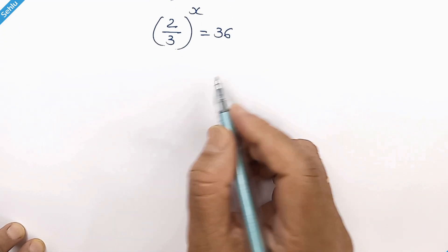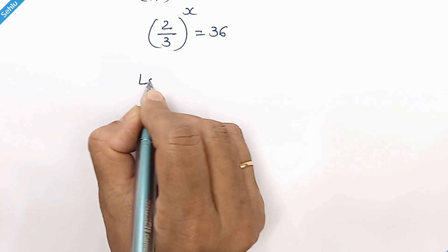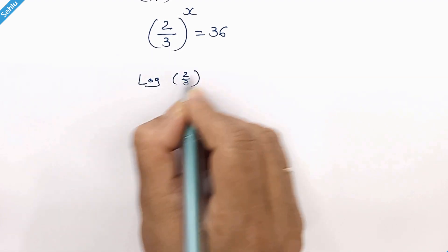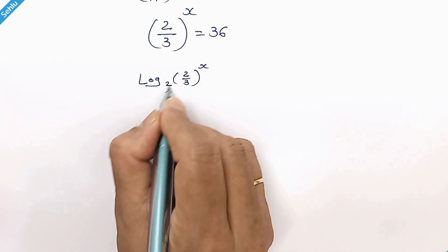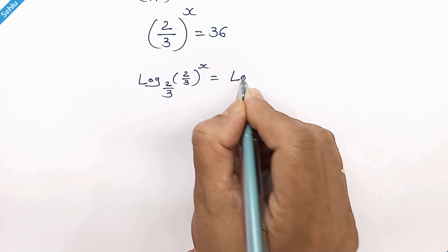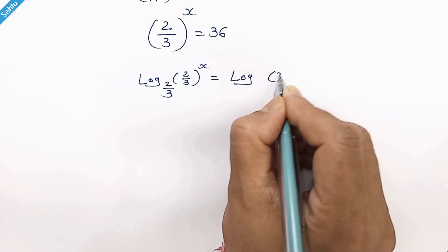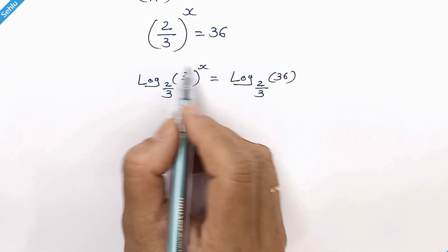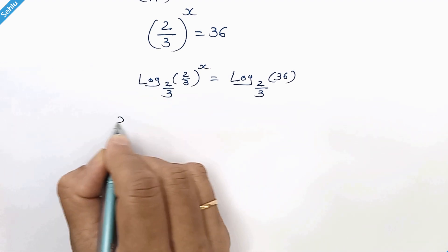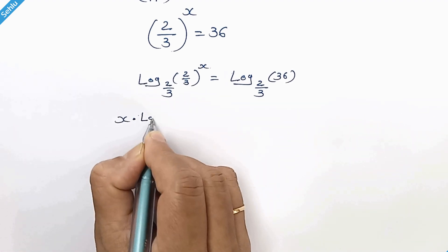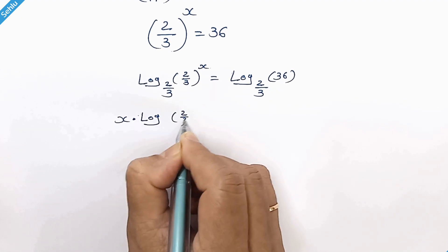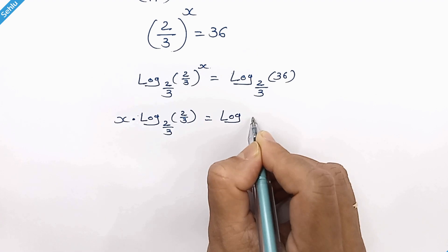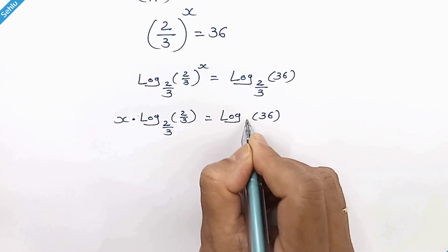From here we need to take a log having base of 2 over 3. This x can be a factor. So it will be x times log of 2 over 3 base 2 over 3 is equal to log of 36 base 2 over 3.